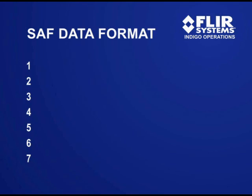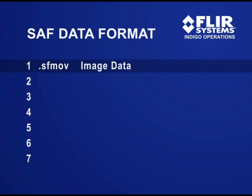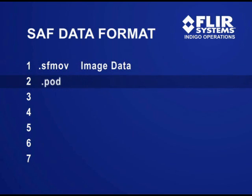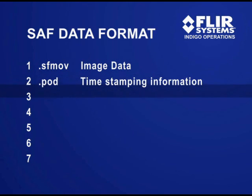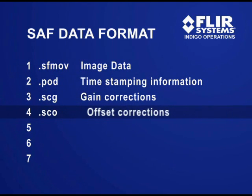For each data set, the .sfmov file contains image data. The .pod contains timestamping information. The .scg contains gain corrections. The .sco contains offset corrections.